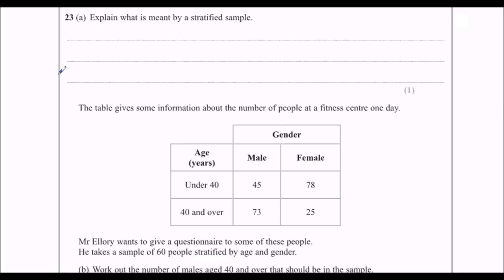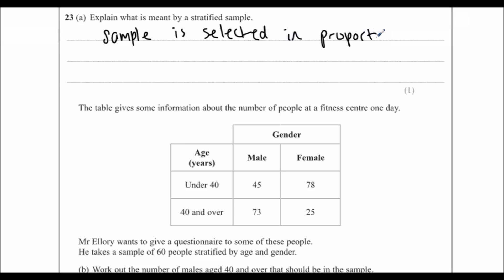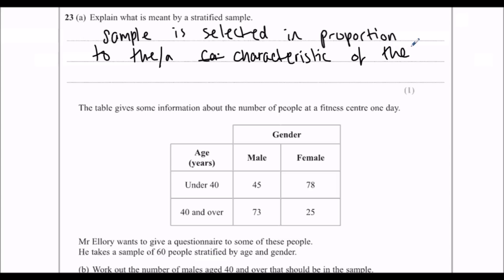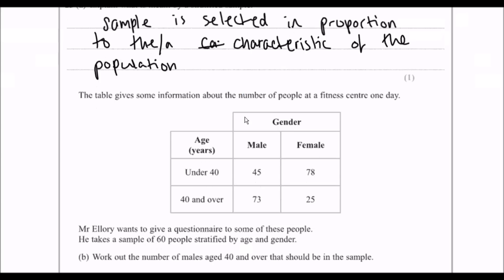A stratified sample is where the number of people we sample is in proportion. So if I have more men than women in my population, I should also have more men than women in the sample. A sample is selected in proportion to the strata — a characteristic of the overall population. It's about proportion; it's about getting the right fraction in the sample.